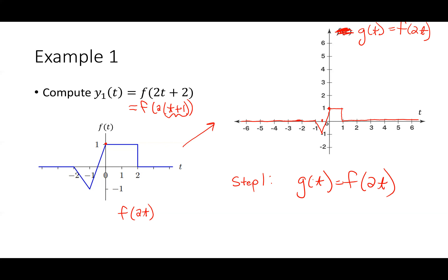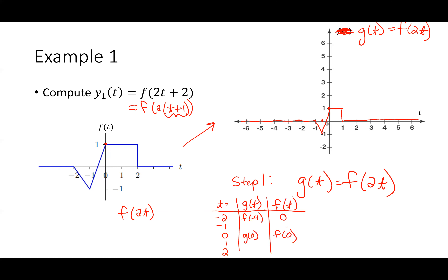If you're not sure, you can plug in values of T — like negative two, negative one, zero, one, two — and compare G of T to F of T at those points. G of T equals F of 2T, so at T equal to negative two, G of T is F of negative four. At T equal to zero, G of zero and F of zero are the same. Just plug in the values and see how they match up.